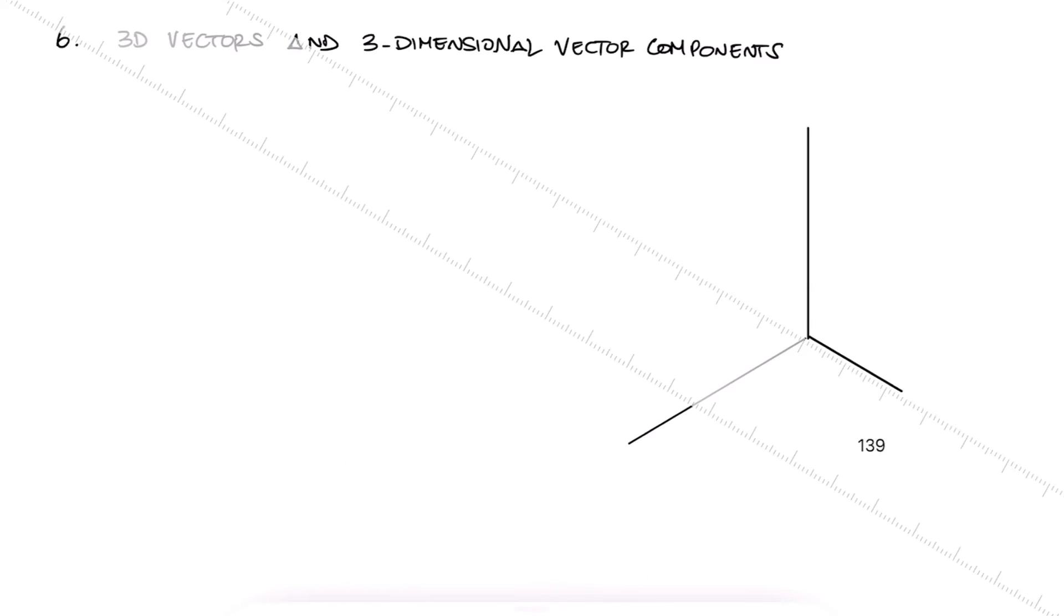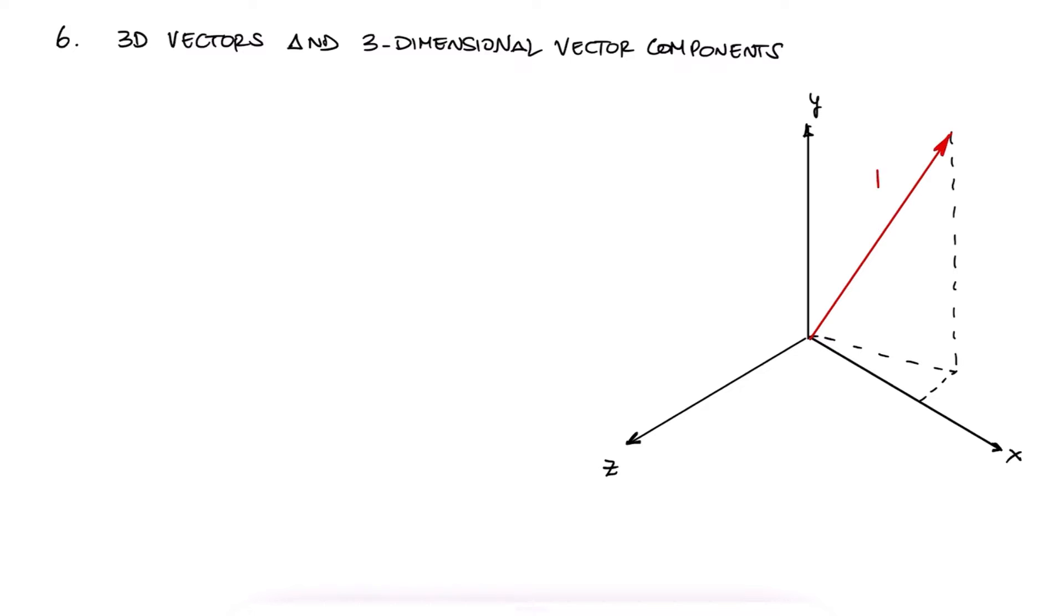The components of a given vector can be found using sines and cosines, in this case with two angles, and of course just one magnitude value.